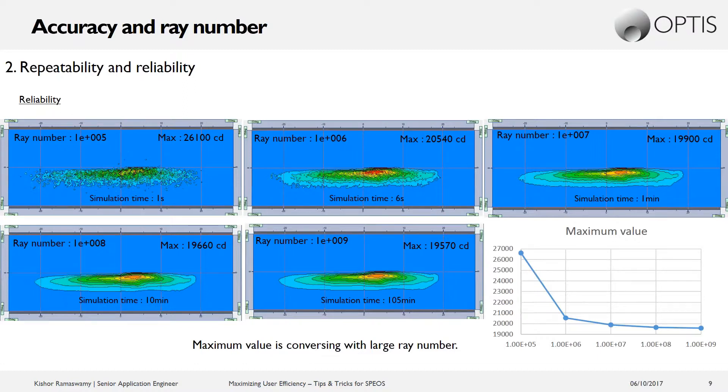Again, this tells us that as we are increasing the rays further and further, our results are getting more reliable because it is not changing as significantly as we go from, let's say, 100 million to 1 billion. So what we are showing here is more of a trial and error. We're running several simulations and trying to assess how reliable is the result. But in reality, we would need a better way of determining whether a result is precise. We wouldn't necessarily want to run 10 simulations to determine if I have a reliable result.